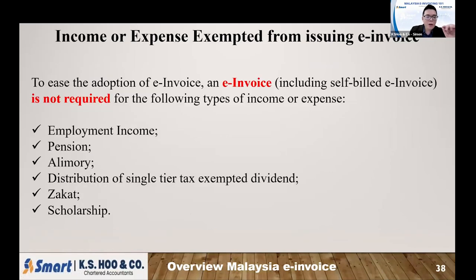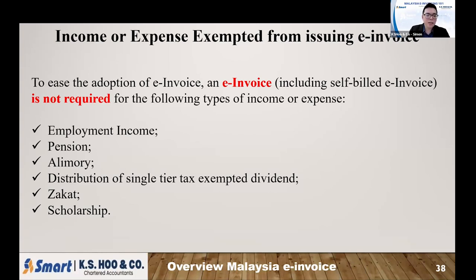What are the transactions that do not require an e-invoice as supporting documentation? First, employment income — when your staff or director receives a salary from the company, they are not required to issue e-invoice, and you don't need an invoice to support that salary expense. Other transactions not requiring e-invoices include pension, alimony, single-tier dividends, scholarships, and similar payments. These currently do not require e-invoice, unless there is a future update from the authorities.